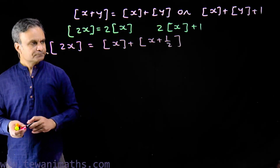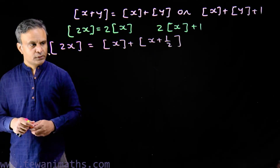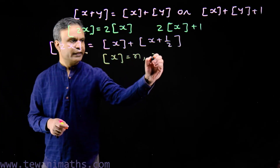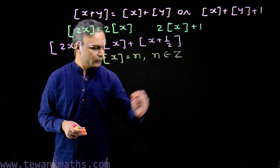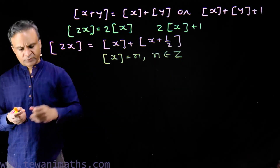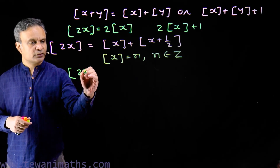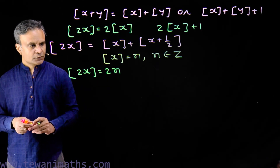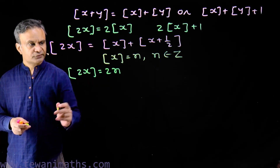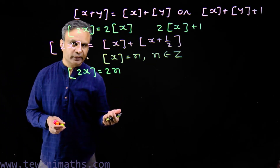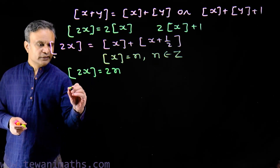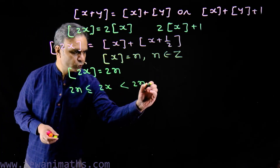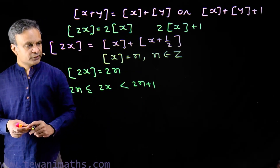From this we can prove that the greatest integer of 2x equals the greatest integer of x plus the greatest integer of x plus 1 upon 2. Let us prove this. Suppose the greatest integer of x equals n, where n belongs to the set of integers. From the first comparison we get the greatest integer of 2x equal to 2n. So 2x lies between consecutive integers 2n and 2n plus 1, including 2n: 2n less than or equal to 2x less than 2n plus 1. So the greatest integer of 2x is 2n.